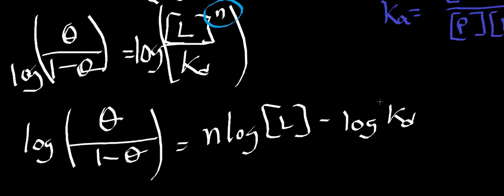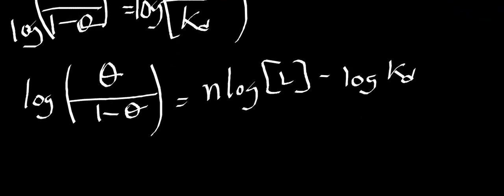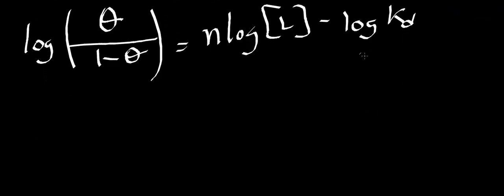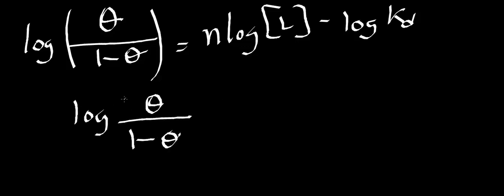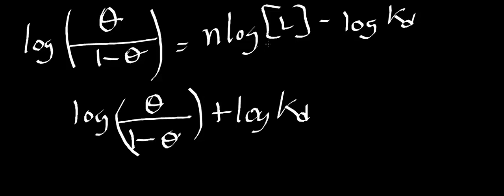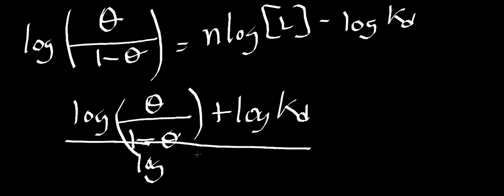To solve for the maximum N possible, we add the log of KD to both sides, giving log of theta divided by 1 minus theta plus the log of KD. Then to isolate N, we divide by the log of the ligand concentration. That gives the maximum Hill coefficient — referred to as N sub T, the theoretical Hill coefficient. The theoretical Hill coefficient will never equal the Hill coefficient you actually get from your data.